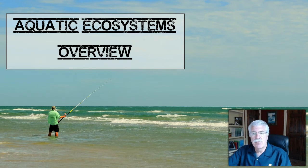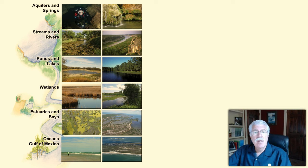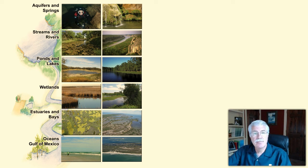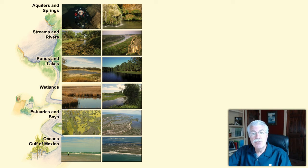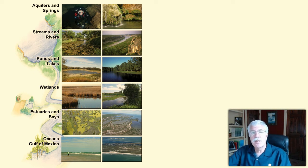Let's talk about kinds of aquatic ecosystems. Ecosystems are organized around bodies of water when they're aquatic ecosystems. Texas has six kinds of aquatic ecosystems: aquifers and springs, rivers and streams, lakes and ponds, wetlands, bays and estuaries, and the ocean. For Texas, the ocean is the Gulf of Mexico. We're going to take each one of these individually and just provide a short introduction — we'll get into more detail in later lessons.